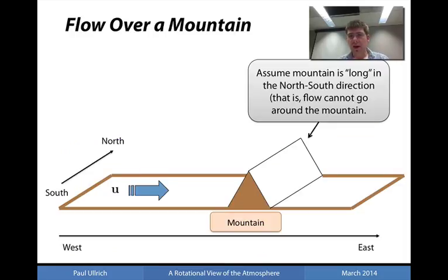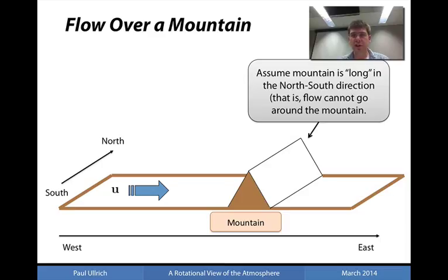Let's assume that in our simplified scenario, we have a very long mountain — that is, it's uniform in the north-south direction to the degree, and it's sufficiently long, that fluid parcels are unable to go around the mountain. Consequently, everything has to essentially remain meridionally symmetric. That is, you can't have any significant changes in the north-south direction associated with the flow, because there's no mechanism by which those changes can be generated.